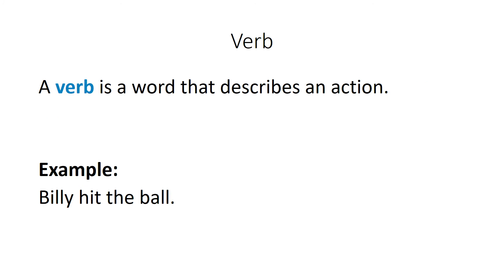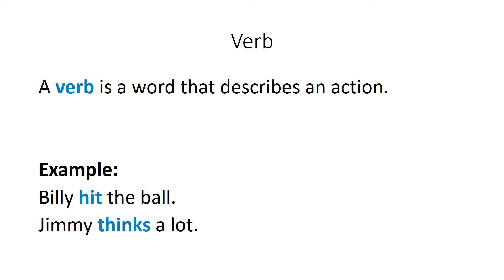A verb is a word that describes an action. So in the sentence 'Billy hit the ball,' hit is the action, so that's the verb. And in the sentence 'Jimmy thinks a lot,' thinks is the verb. And again, if you're wondering — is think a verb, an action? It is, but it's an abstract action. It's something you can't see, hear, or feel, but it's something that goes on in the mind. It's still an action, just an abstract one — not concrete.